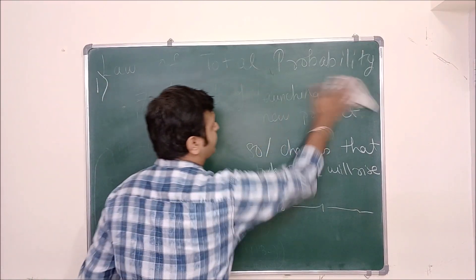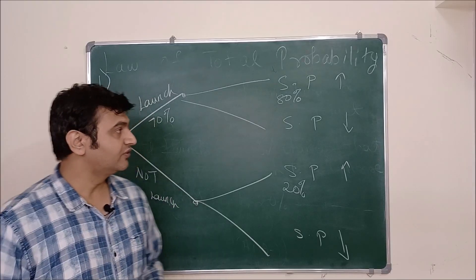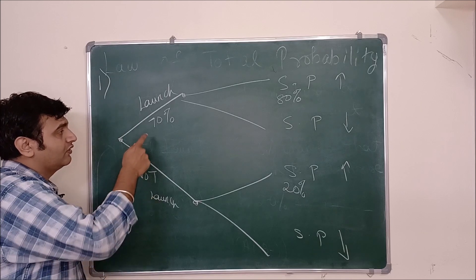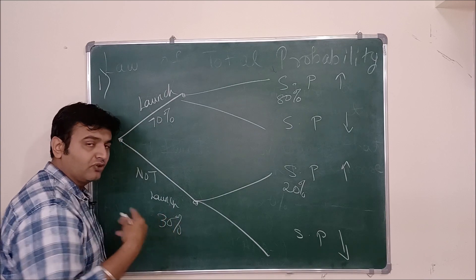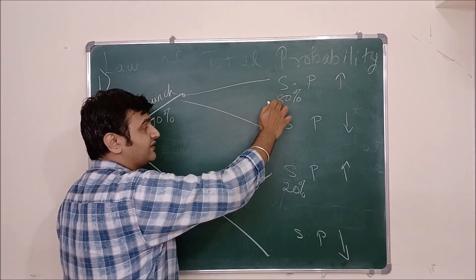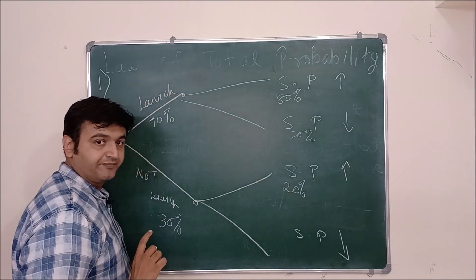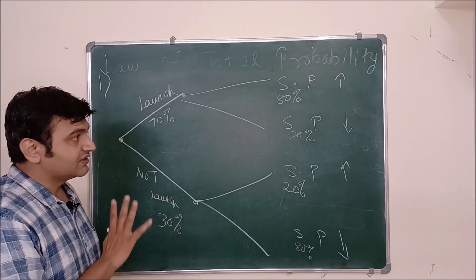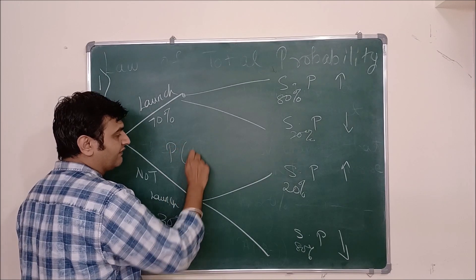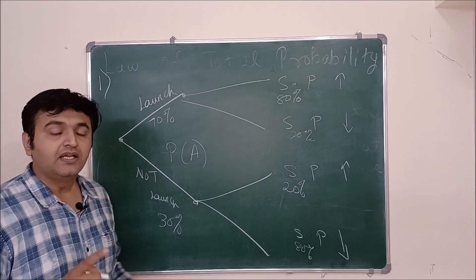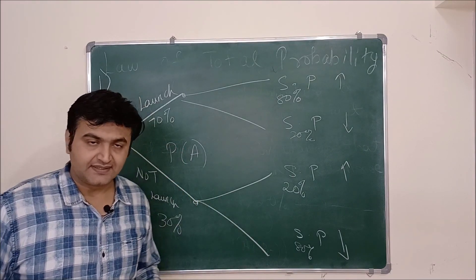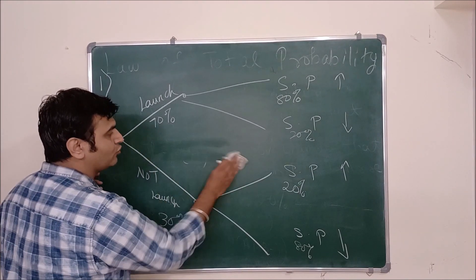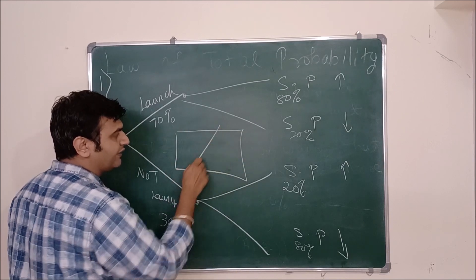Here is the tree diagram. The product will either be launched or not. There is a 70% chance it will be launched and 30% it will not. If launched, the stock price increases with probability 80% and decreases with 20%. If not launched, the stock price increases with 20% and decreases with 80%. We want to find the probability of event A — that the stock price will increase — so we divide the sample space into two parts: launched (L) or not launched.